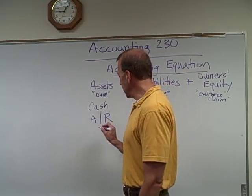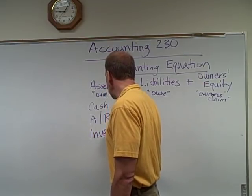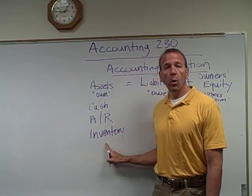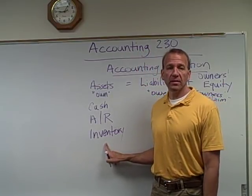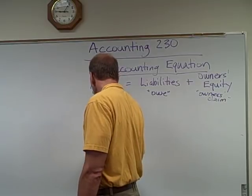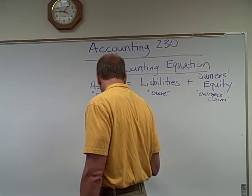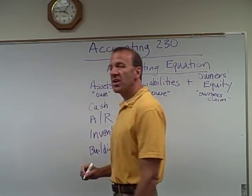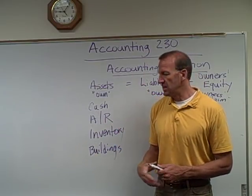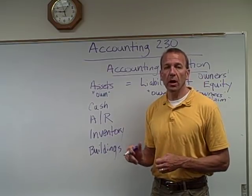Another asset is inventory. Inventory is definitely an asset — it's things that we own that we're trying to sell. And buildings are another common asset. There are hundreds and hundreds of assets, but these are some very common assets that we own.